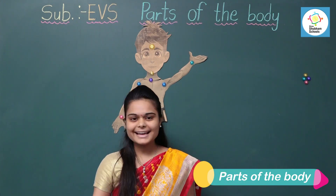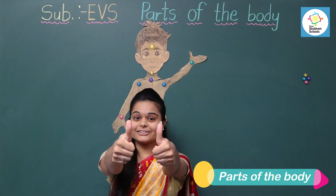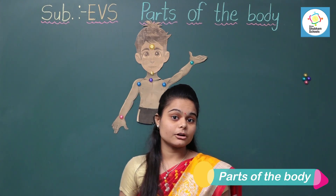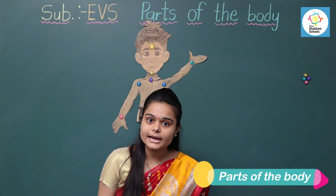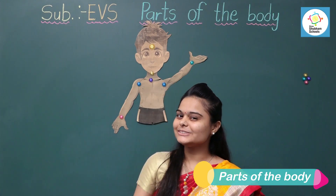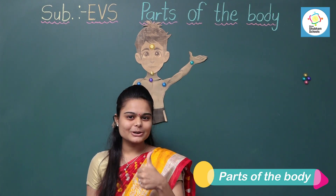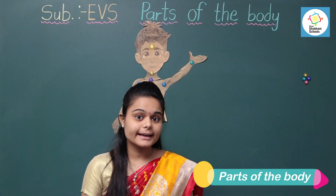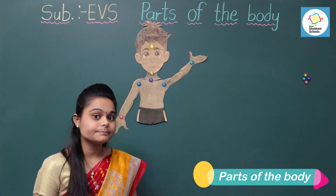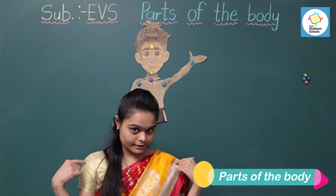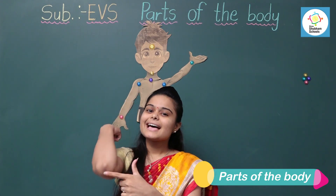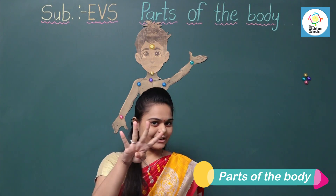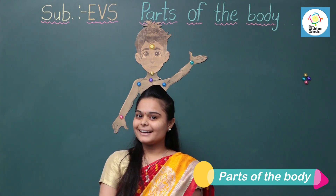The last one — these are our thumbs. Thumbs are also used for a sign, like very good, great, good job. So, in one hand we have: shoulders, arms, elbows, wrist, palm, fingers, thumb.